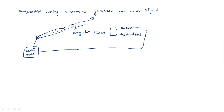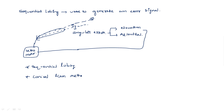Such error signals can be generated by two methods: sequential lobing and the conical scan method. In this video I will explain sequential lobing, and in the next video I will explain the conical scan method.